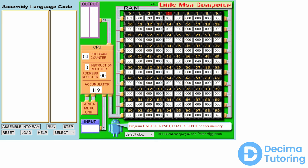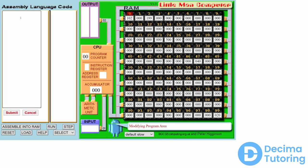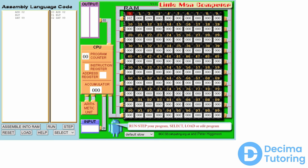I hope you found that interesting. In the next video we're going to look at how we can make programming this computer much easier by using an assembly language. Rather than typing values directly into the RAM, we can type some fairly readable code on the left — which, once assembled into the RAM, gives us the same memory contents but is much more readable. Thanks for watching and stay tuned for part two.